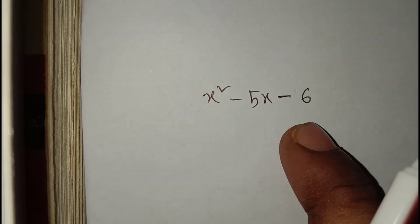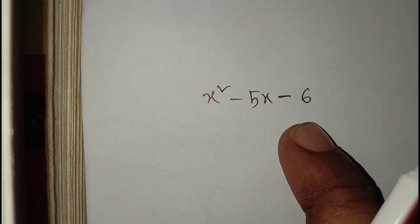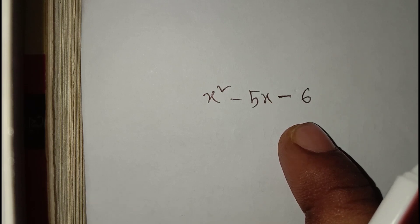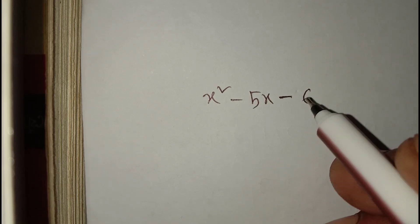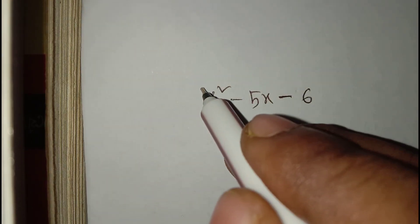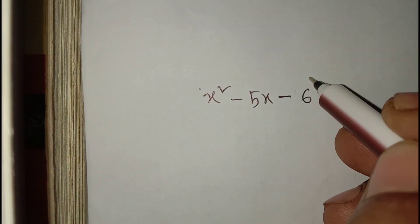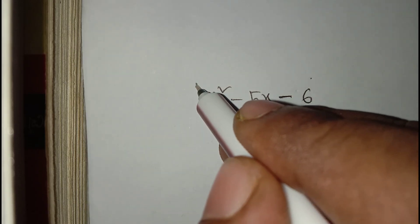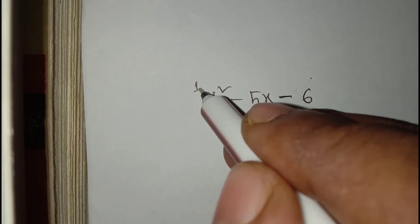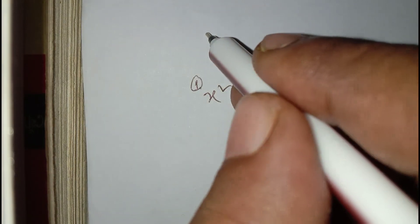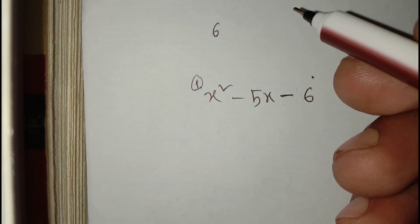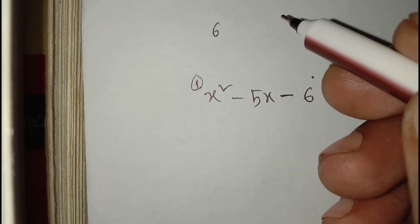Now we will factorize this equation and teach you how to factorize easily. First of all, we have to multiply the first constant value and the last constant value. Here the first constant is one and the last constant value is six, so six multiplied by one is equal to six.